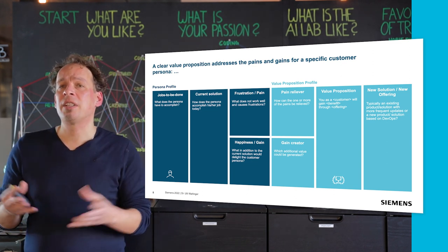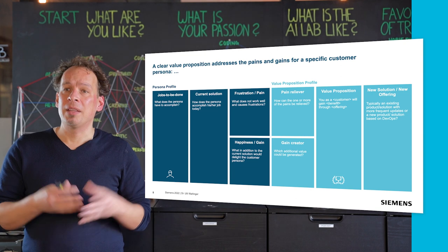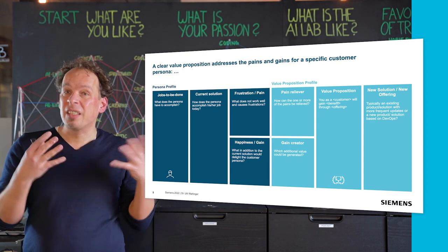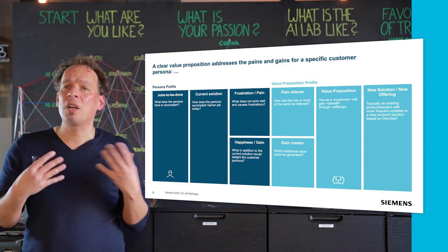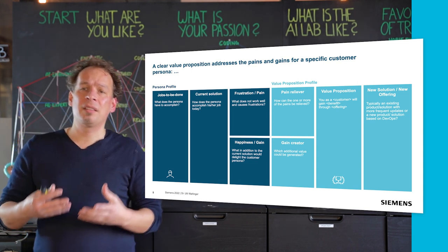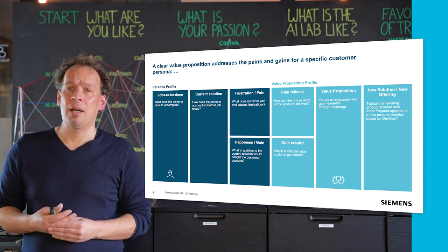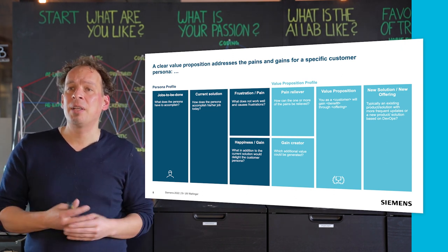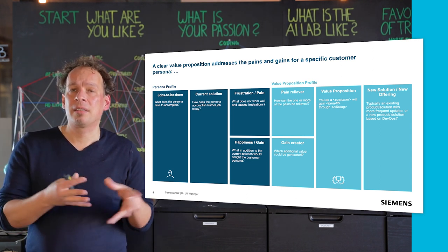We differentiate between two different aspects. On one side, we talk about a specific persona that has specific jobs to be done: what does the persona have to accomplish, and how do they accomplish their jobs and tasks? What are the pains — the frustration points — and what are the gains? Jobs to be done, current solution, frustration, pains and gains, and gain relievers are all important elements in designing a customer-specific persona.